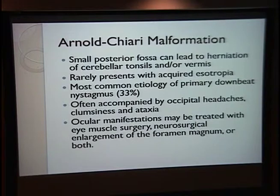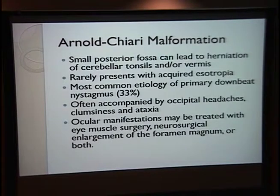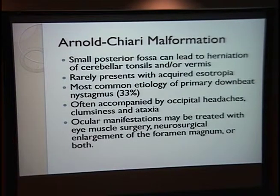This is a rare presentation, which is why I wanted to bring it to you all for grand rounds. Another basic fact about Chiari that I find interesting is that it causes a lot of downbeat nystagmus — so if you have a patient in the clinic with primary downbeat nystagmus, you should think about this. Other symptoms include headaches, clumsiness, and ataxia, along with ocular manifestations. There are really two main schools of thought on treating Chiari malformations that affect the eye: you can have successful resolution with eye muscle surgery, or you can perform neurosurgical enlargement of the foramen magnum, or both, depending on how the patient's symptoms present.